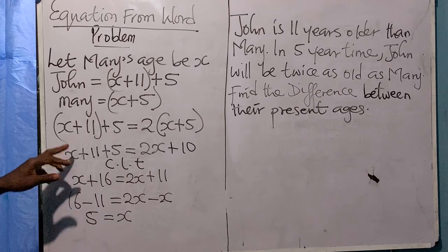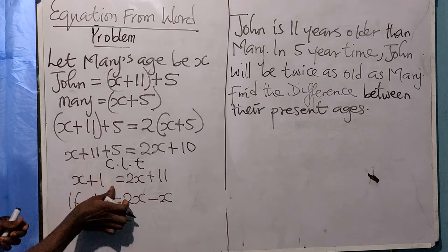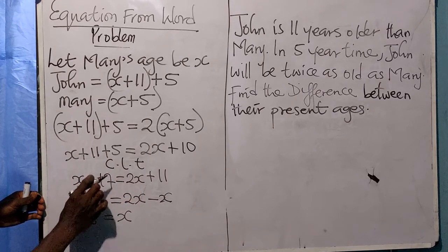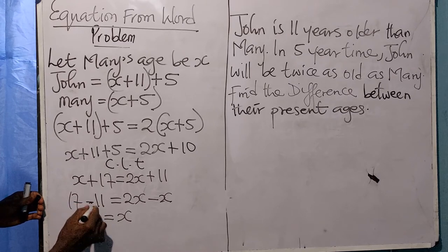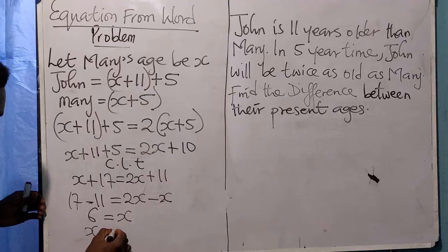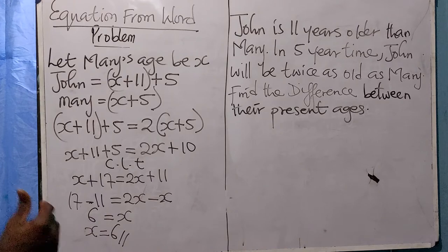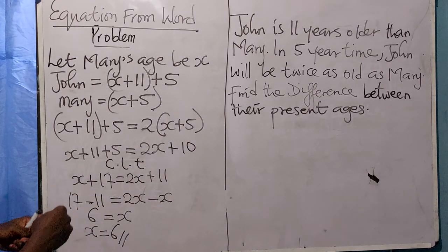Actually, sorry—this should be 17. So 17 minus 11 gives 6, which means Mary's age is 6 years old. John's age will be 17 years. That is to say, if Mary's age is 6 and John's age is...